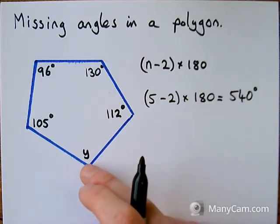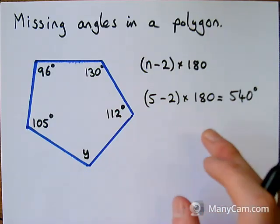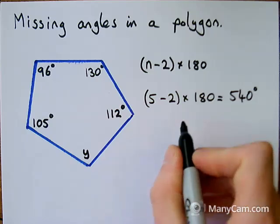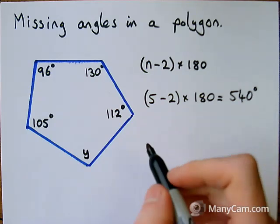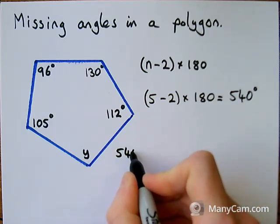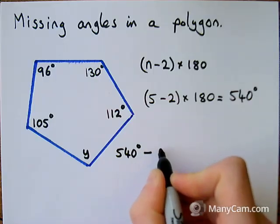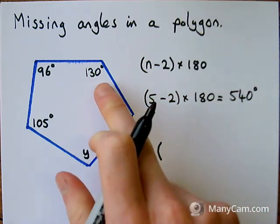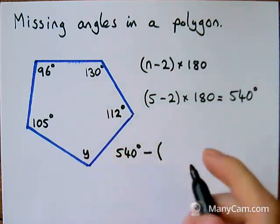So I need to work out what's missing. There's a few ways you can do this, but I'm going to show you the way that I like to do it. So I'm going to start off with the total amount of angles, so I've got 540 degrees. And then I'm going to take away all of the angles that I know added together.